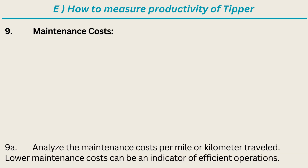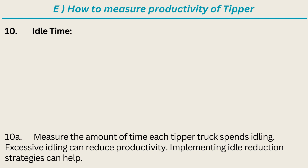9. Maintenance Costs: analyze the maintenance costs per mile or kilometer traveled — lower maintenance costs can be an indicator of efficient operations. 10. Idle Time: measure the amount of time each tipper truck spends idling. Excessive idling can reduce productivity; implementing idle reduction strategies can help.